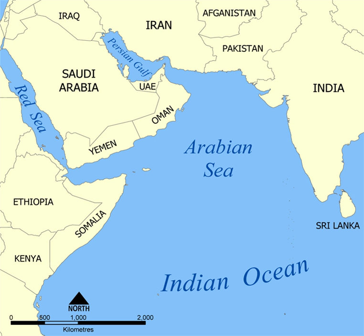=== Arctic Ocean === Clockwise from 180 degrees: Chukchi Sea, East Siberian Sea, Laptev Sea, Kara Sea, Barents Sea (connected to Kara Sea by Kara Strait), Pechora Sea, White Sea, Queen Victoria Sea, Wandel Sea, Greenland Sea, Lincoln Sea, Baffin Bay, the Northwest Passages, Prince Gustav Adolf Sea, Amundsen Gulf. More to be listed.